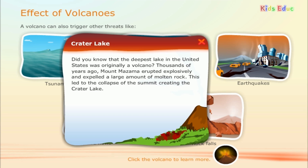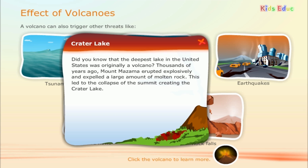Did you know that the deepest lake in the United States was originally a volcano? Thousands of years ago, Mount Mazama erupted explosively and expelled a large amount of molten rock. This led to the collapse of the summit, creating the crater lake.